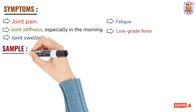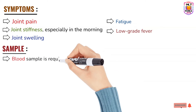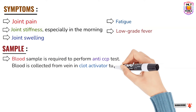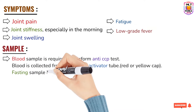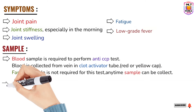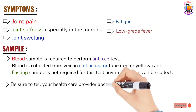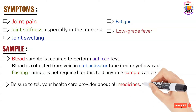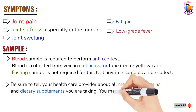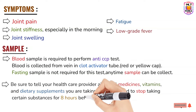A blood sample is needed to perform the test. Blood is collected from the vein of the patient and collected in a clot activator tube — that is a red or yellow cap tube. Blood can be collected at any time; no fasting is required. However, one important point is that if the patient is taking any medication such as vitamins, supplements, or specific medicines, they should inform the doctor, because some medicines are prohibited and should not be taken at least 8 hours before the test.